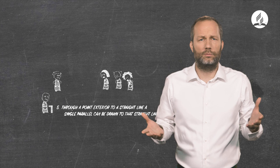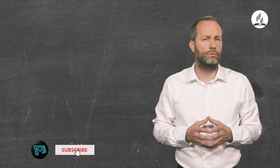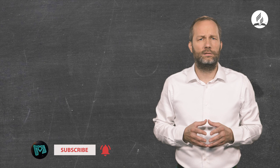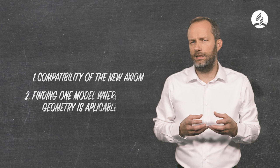And because axioms are not provable, no one could argue with them. There were only two problems left, both of which were soon solved. The first related to the compatibility of the new axiom with the rest of the axiomatic system. And the second, more important, involved finding at least one model where this new geometry is applicable.